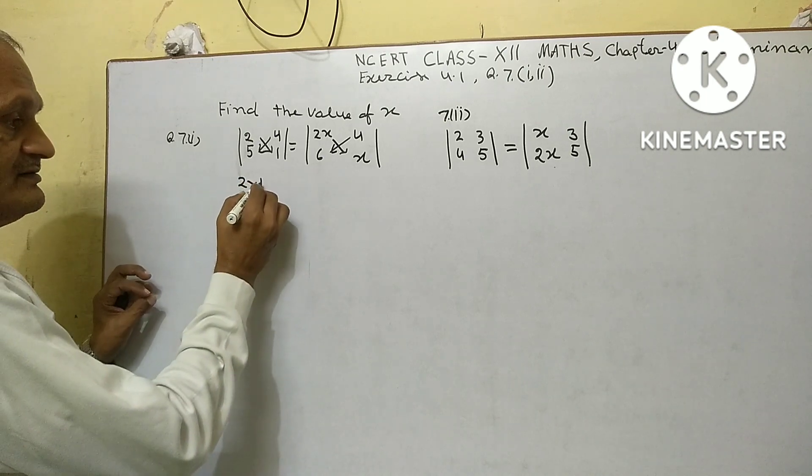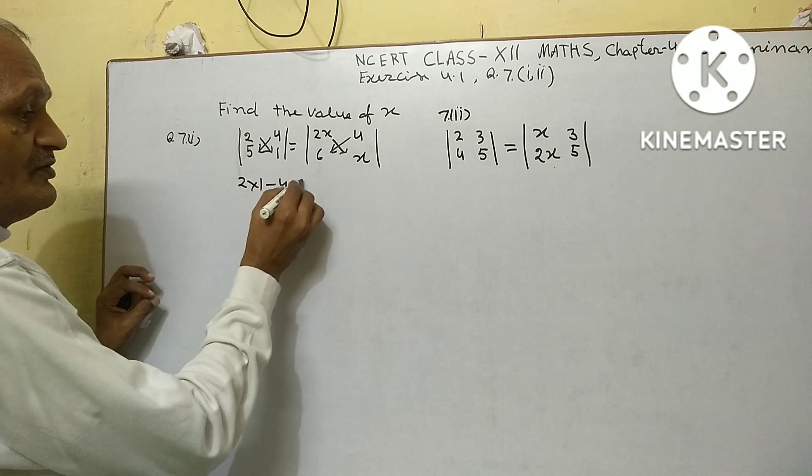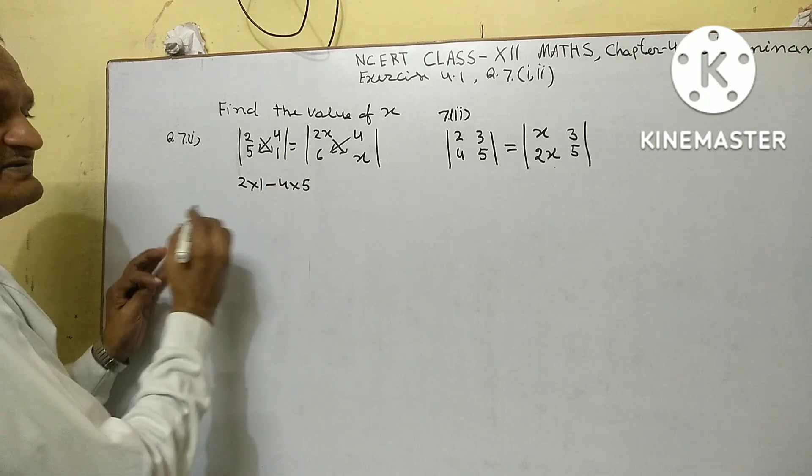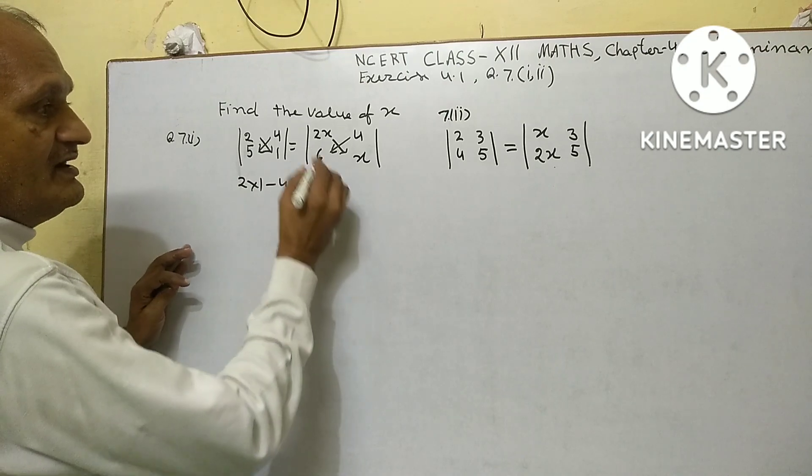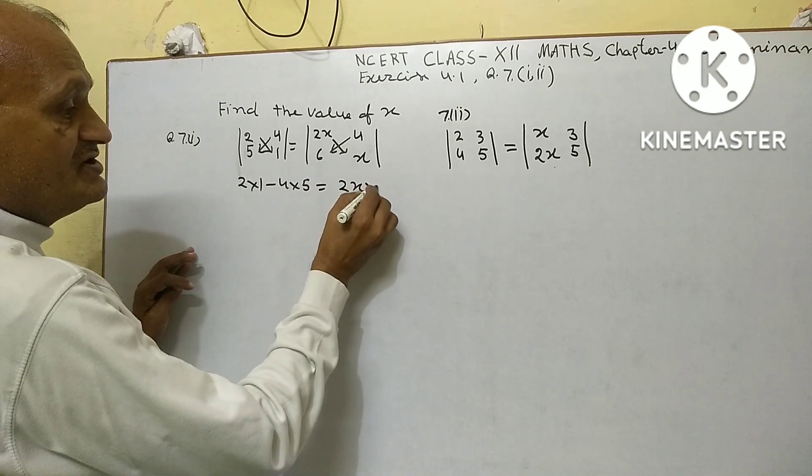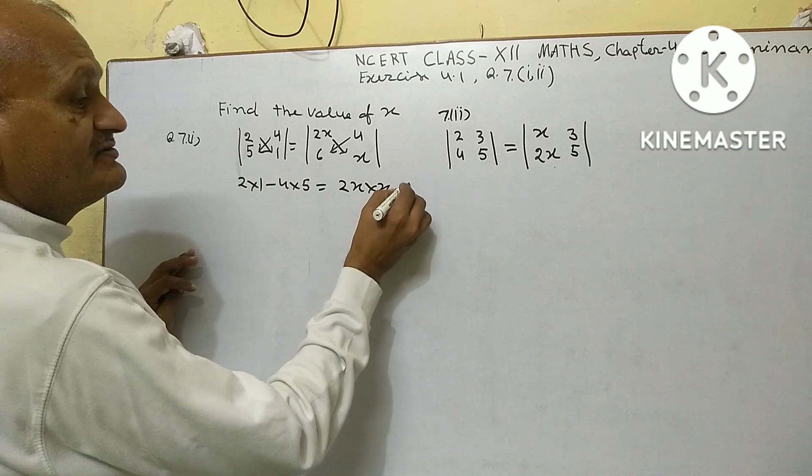2 into 1, 4 into 5, minus that. Equal to x into x minus 4 into 6.